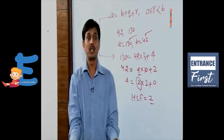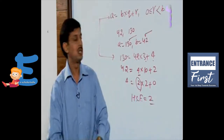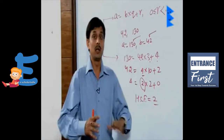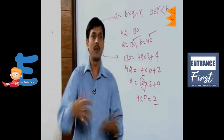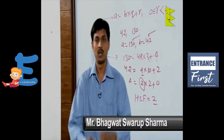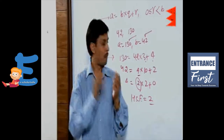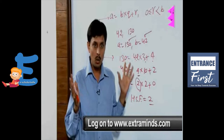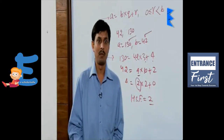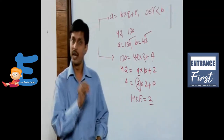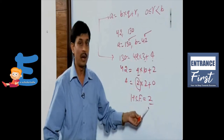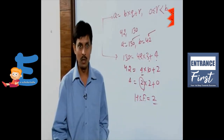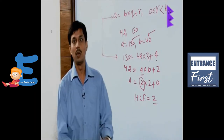Now a question arises: why is 2 the HCF of 130 and 42? The answer is simple — whatever the HCF is, you divide both numbers by it and check if the resulting quotients are co-prime numbers. In this case, 130 and 42 when divided by 2 give 65 and 21, which are relatively prime. Hence it is proved that 2 is the HCF of the given numbers.